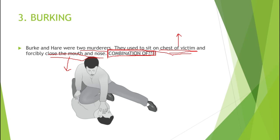On the 17th incident, a suspicious neighbor informed the police. Both were arrested and Hare confessed. Burke was ultimately hanged publicly on 28th January 1829.